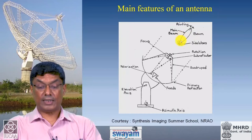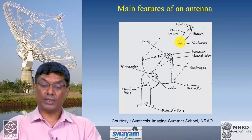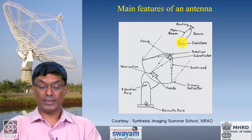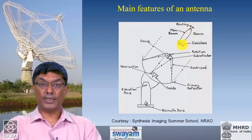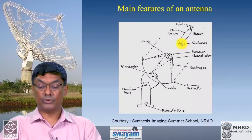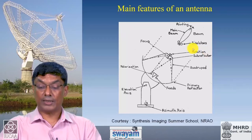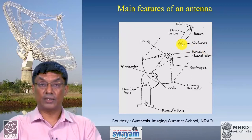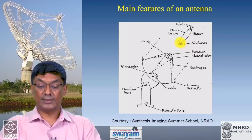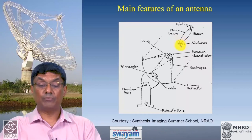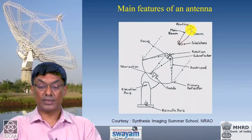In addition to the main beam, the antenna can have a low level of response at angles far away from the main pointing direction — these are called side lobes. One must worry about side lobes because if you are observing a source in a given direction you do not want the antenna picking up signals from a source at a far angular position through the side lobe response. The design tries to minimize the amplitude of side lobes so that most signal is collected through the main lobe.